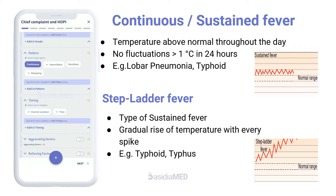If the patient's temperature remains above normal throughout the day and does not fluctuate more than 1 degree Celsius in 24 hours, then it is said to be a continuous fever, also called sustained fever. Such fevers are seen in lobar pneumonia and typhoid. Stepladder fever is a type of sustained fever where the temperature rises gradually to a higher level with every spike. Continuous or sustained fever is usually not associated with true chills or rigors. Stepladder pattern is characteristic of typhoid and typhus.